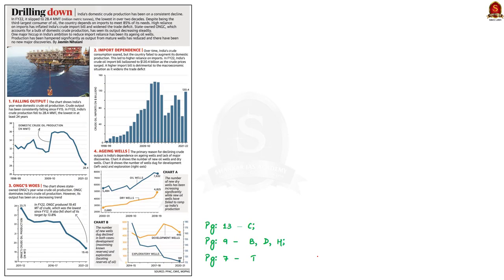This data point article talks about India's domestic crude production. The domestic crude production in India has been on a constant decline. In financial year 2022, it slipped to 28.4 million metric tons — the lowest in over two decades. India is the third largest consumer of oil, but for 85% of its needs, the country depends on imports.